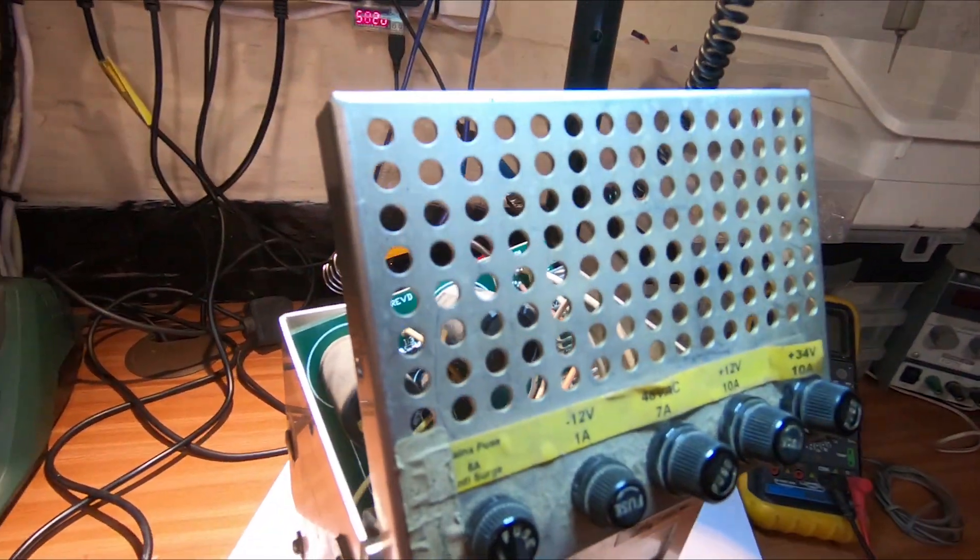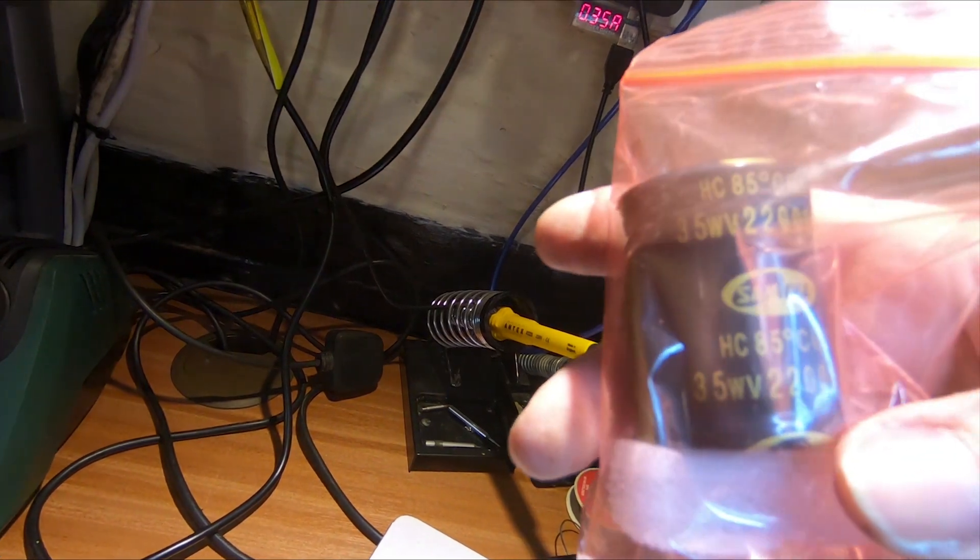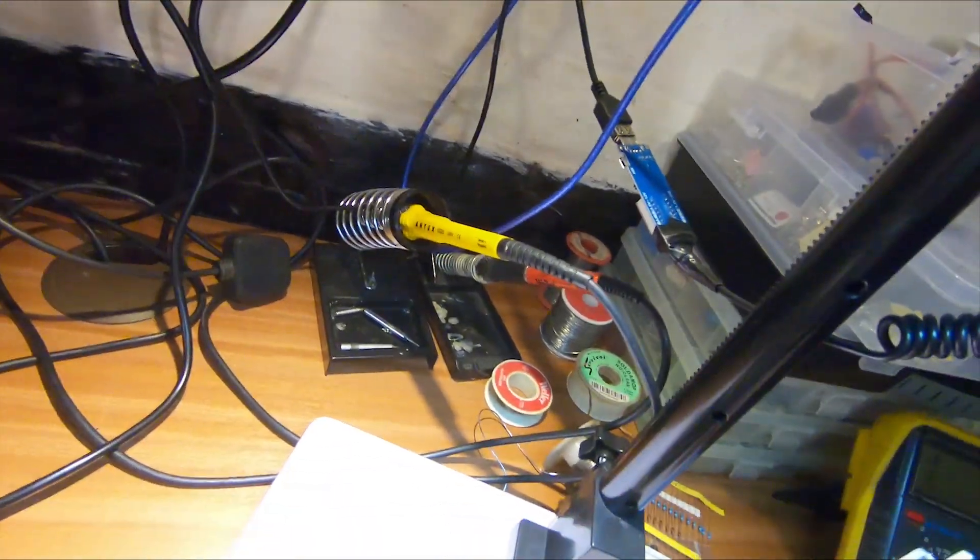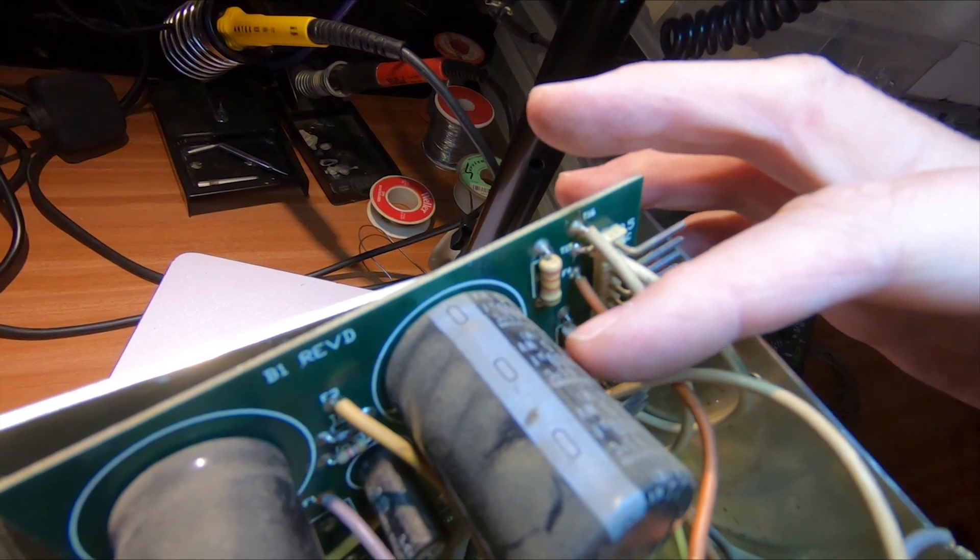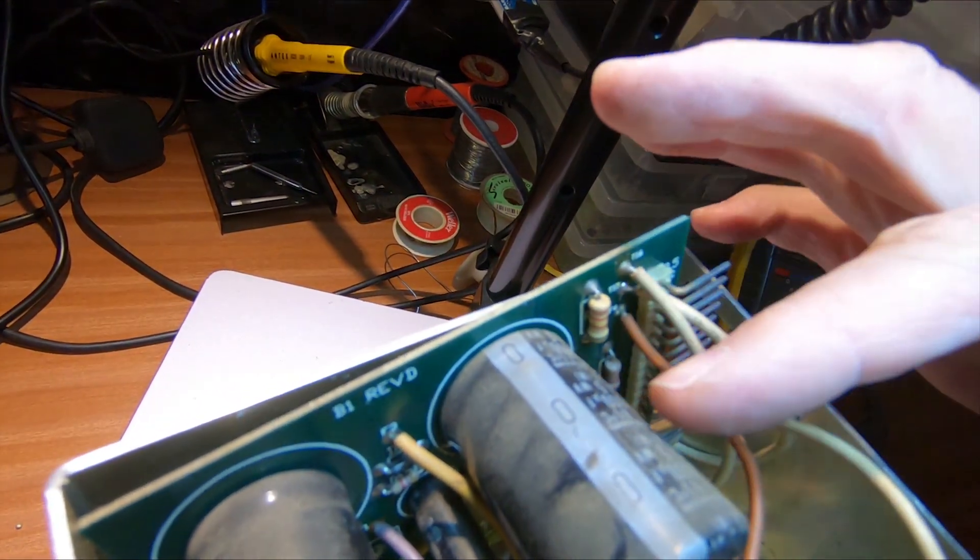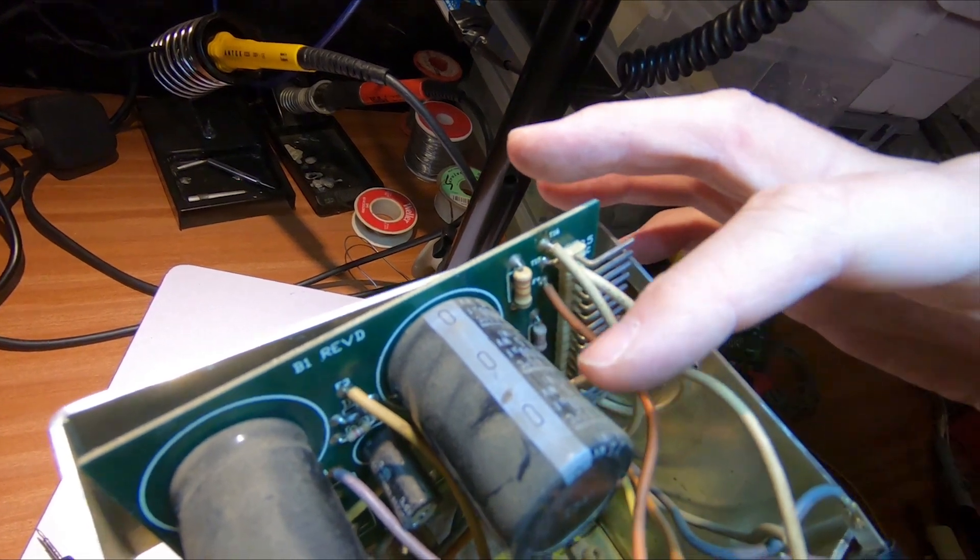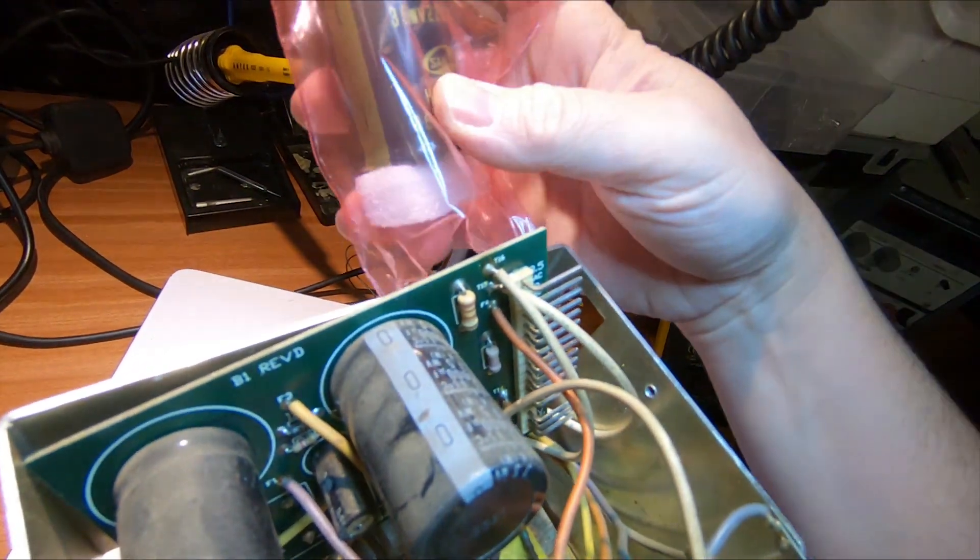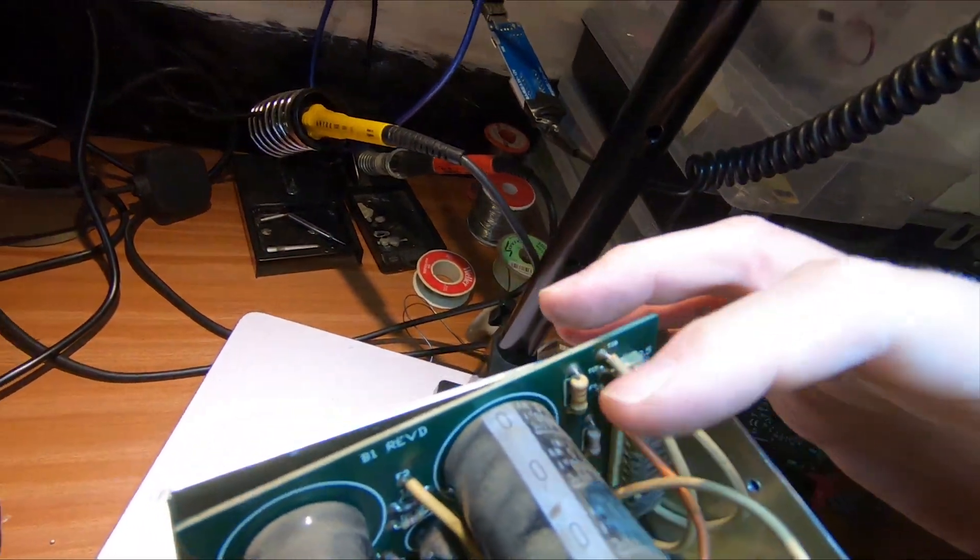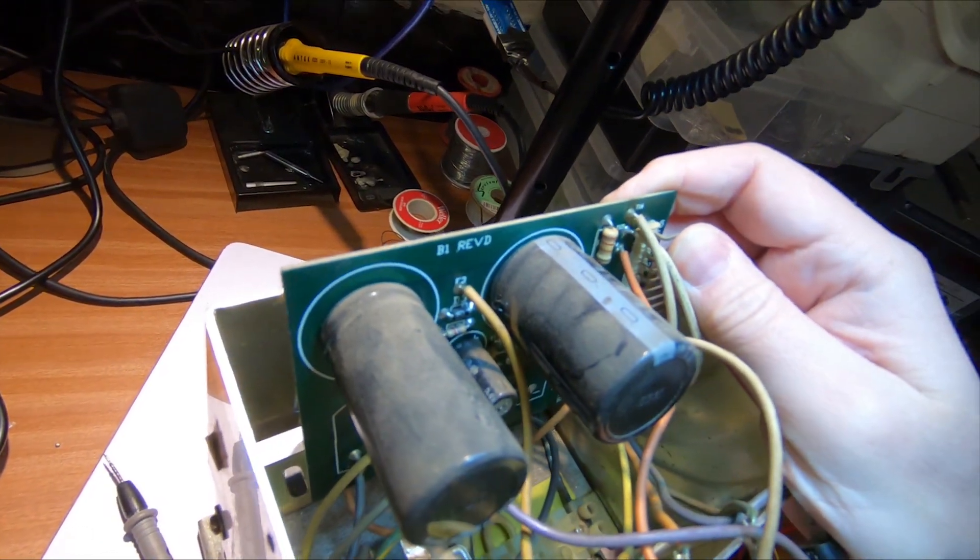I only have in stock this capacitor which is a 35 volt 22,000 microfarad. This will be fine to replace the 15,000 microfarad. A larger capacitance is fine as long as the voltage rating is the same or higher. In this function it's just a smoothing capacitor so the larger capacitance is fine. I'll have to order suitable replacements for the others.